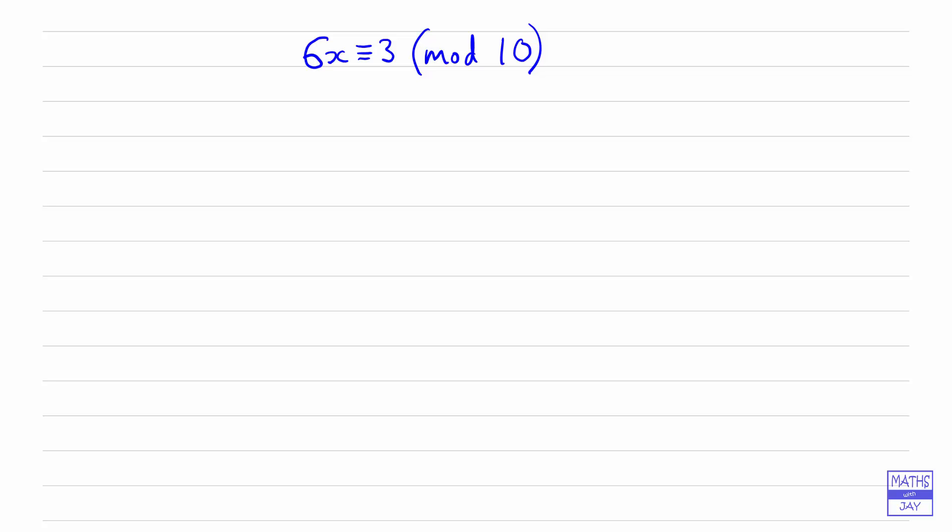So what does it actually mean when we say that 6x is congruent to 3 modulo 10? Well, if we want to write this as an equals, what it actually means is that 6x is the same as 3 plus or minus a multiple of 10.